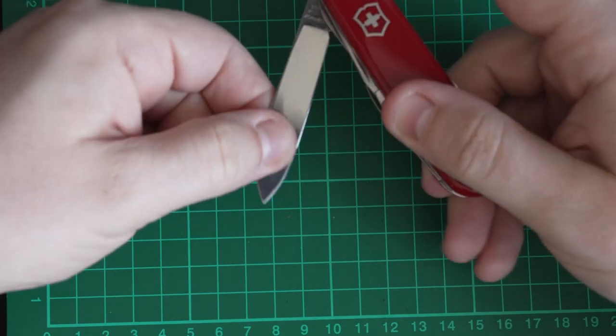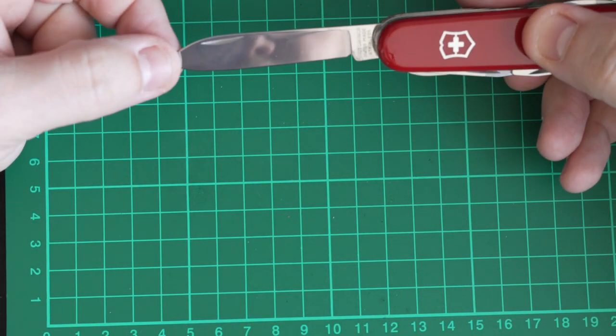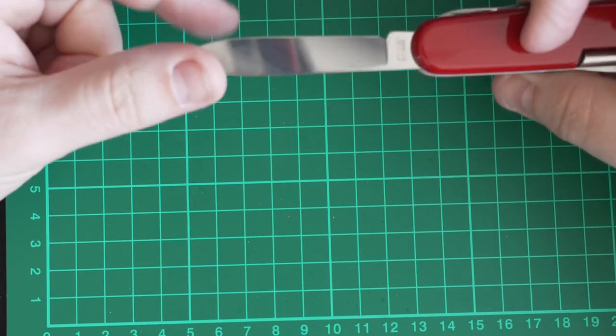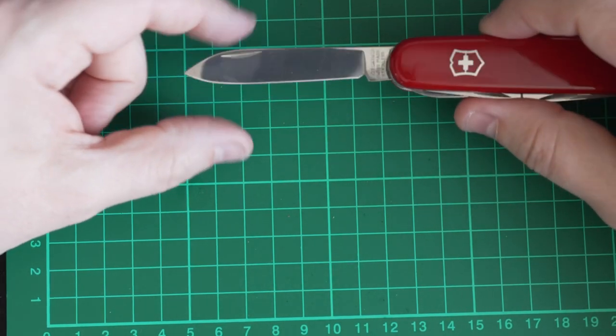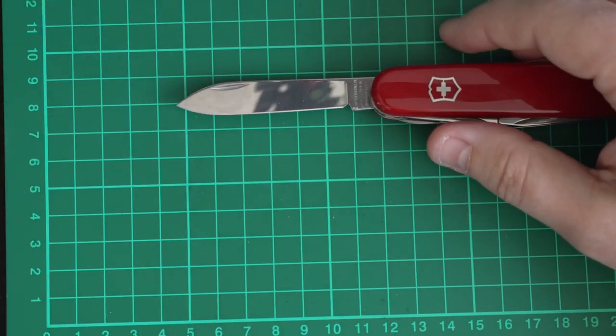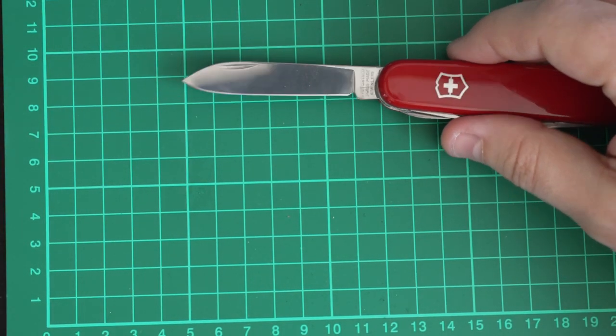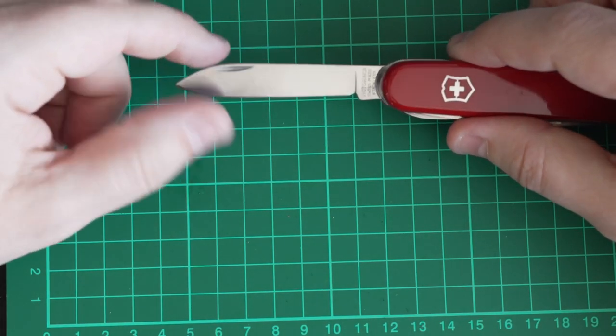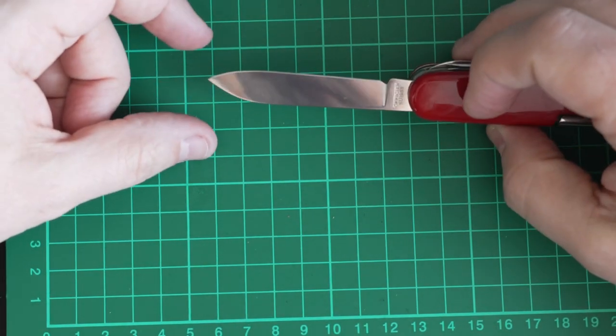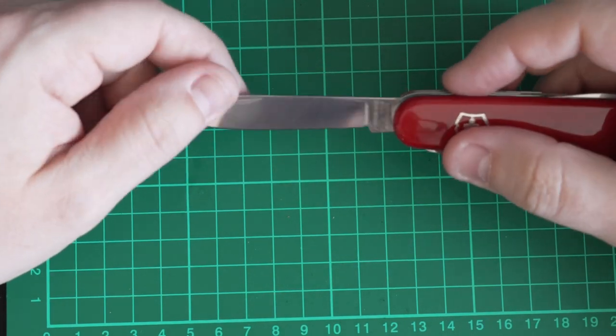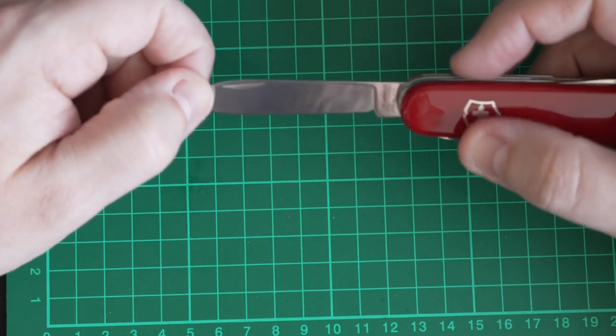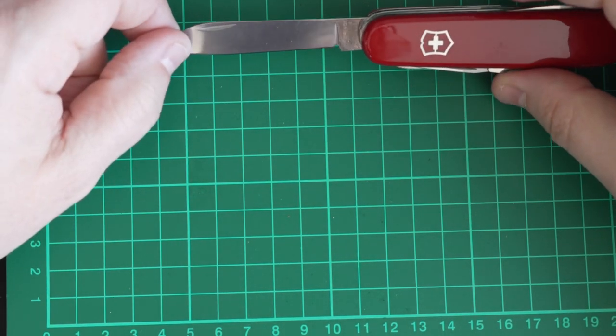And then we're into the blades. So we have the large main blade, which I use as a sort of general purpose blade. For the price of the knife, I think the blade is quite good. It comes very sharp. People will complain about the blade steel, but I think for the price of these, like I say, I think this was around £25-ish. Was that like $28, $30?